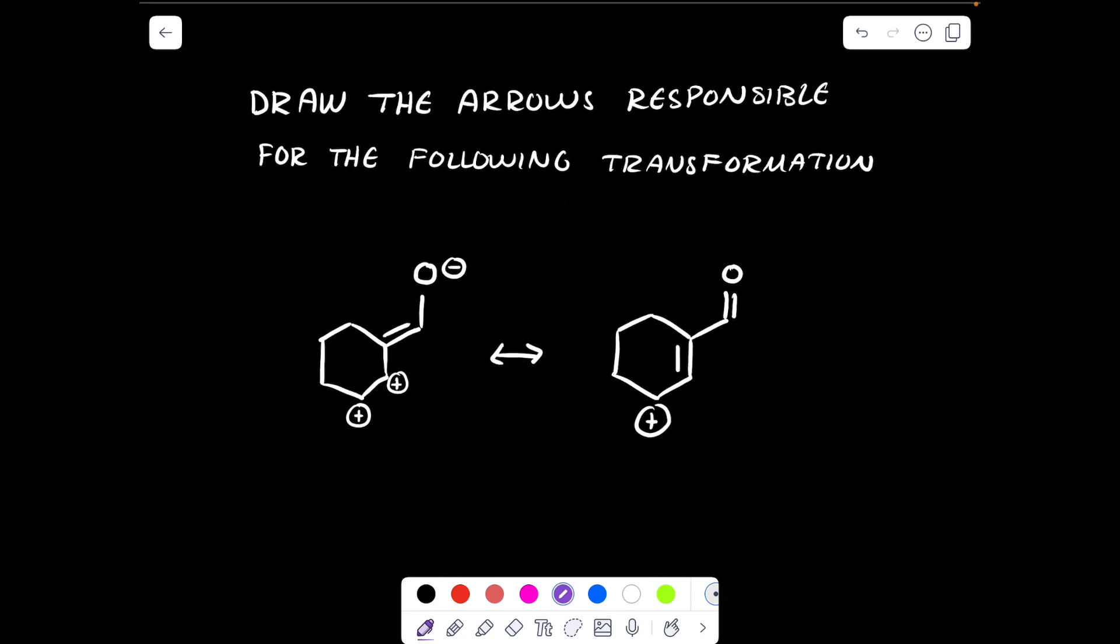So finally, we have our last question: draw the arrows responsible for the following transformation. So I need to move some electrons. Whenever I want to move electrons, I always want to start at the most charged atom. So where a negatively charged atom would be more reactive than an atom with lone pairs that's neutral, which would be more reactive than an atom with no lone pairs at all.